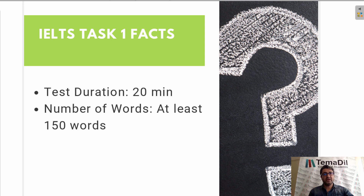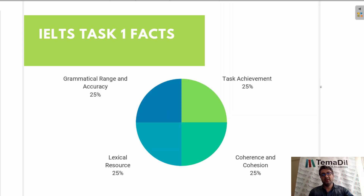Let's check out the assessment part as well. There are four key factors here, which are grammatical range and accuracy, task achievement, lexical resource, and coherence and cohesion.